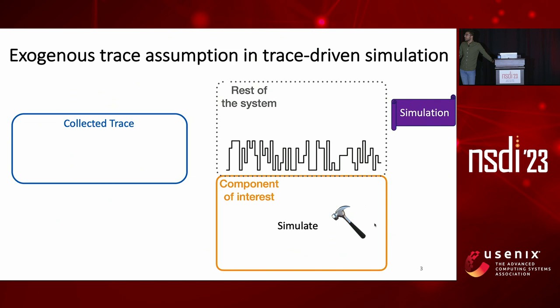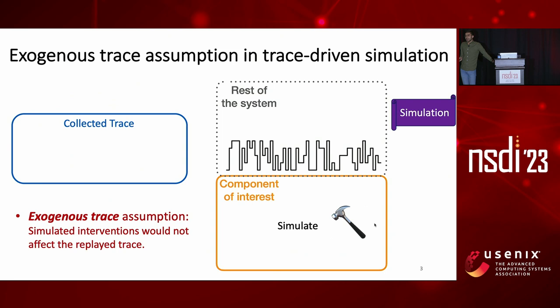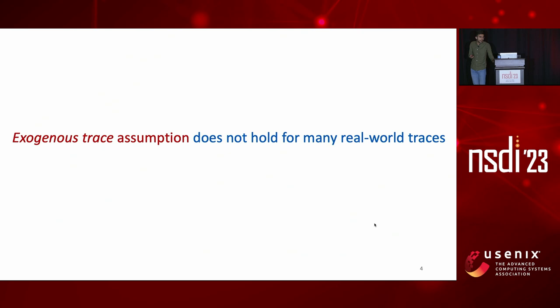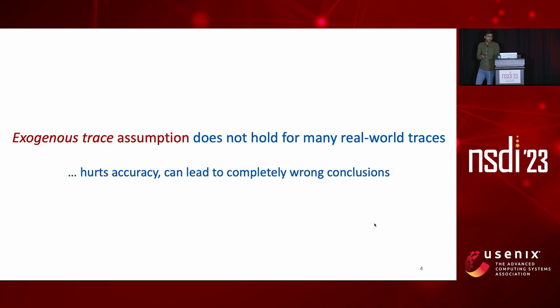The underlying assumption we make when we replay the trace is that this trace is exogenous, which means that interventions we're simulating do not affect the trace that we're replaying. Exogenous trace assumption does not hold in many real-world traces, which can hurt accuracy and lead to completely wrong conclusions, as I'll show you with an example.